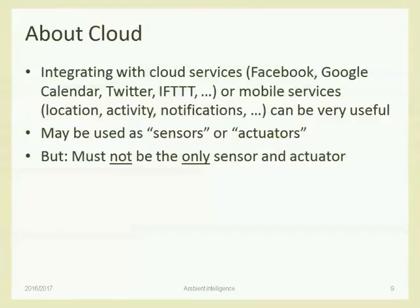Don't make a system that only relies on information coming from the cloud with no information from the environment — that won't be eligible for AmI. We need at least some local sensor and some actuator in the environment. Then we can enrich them with information from outside — the cloud, mobile applications, and so on.